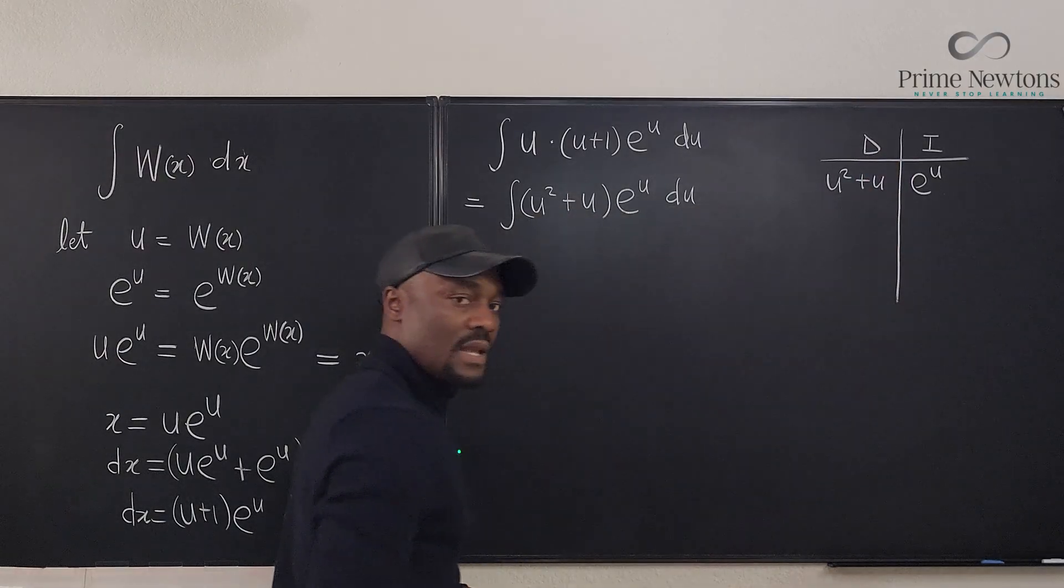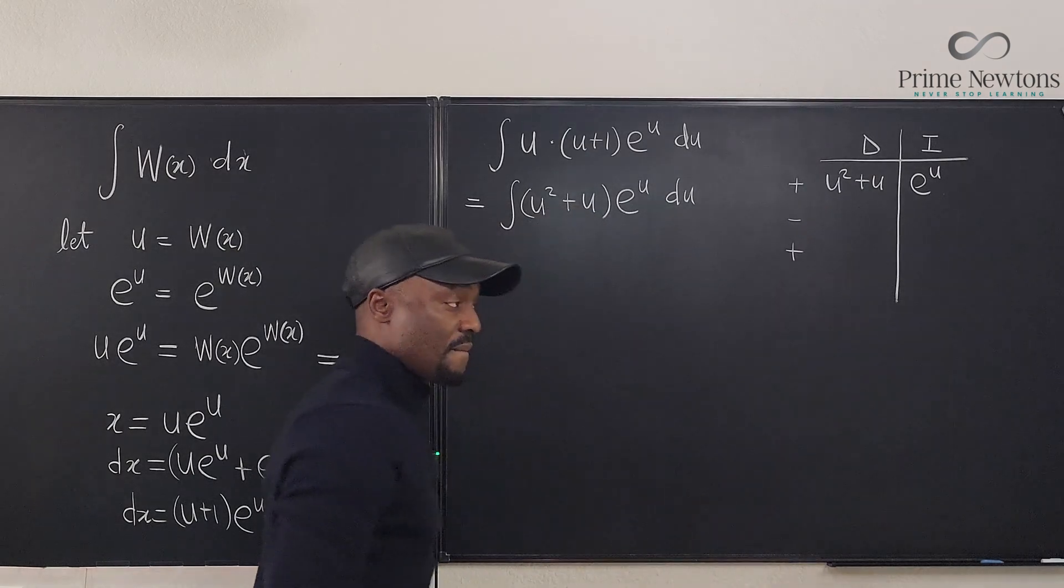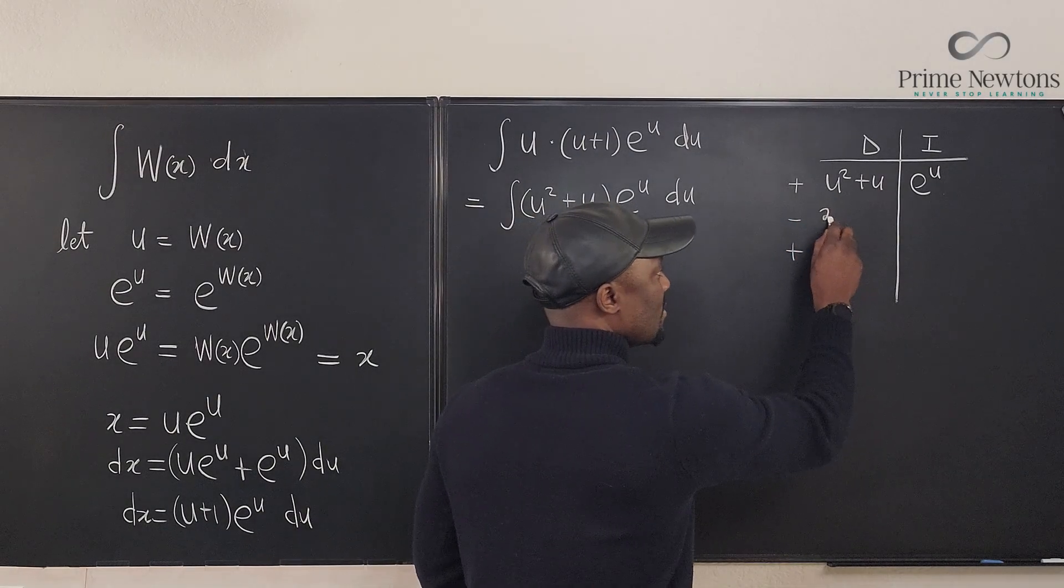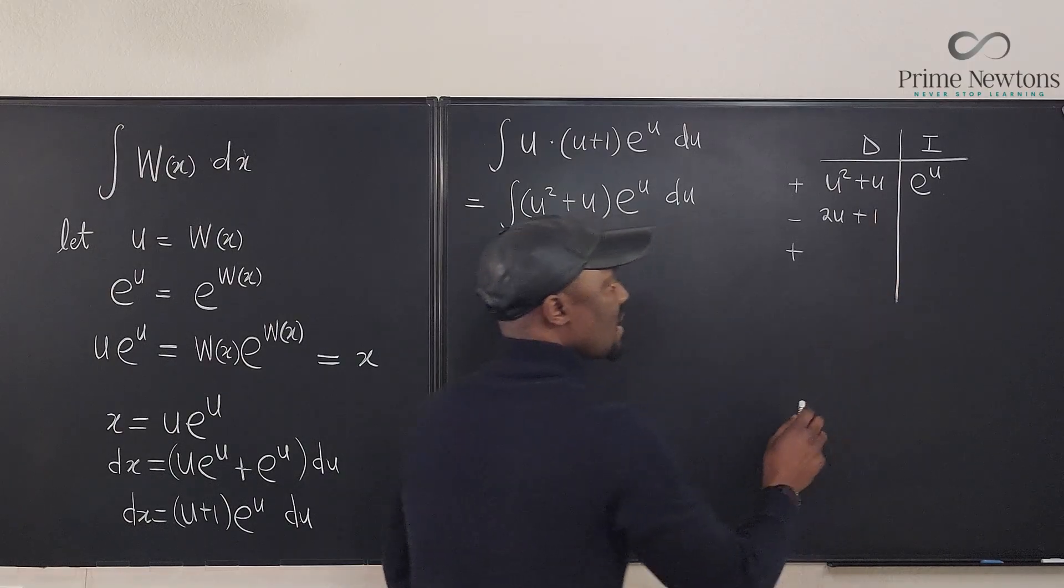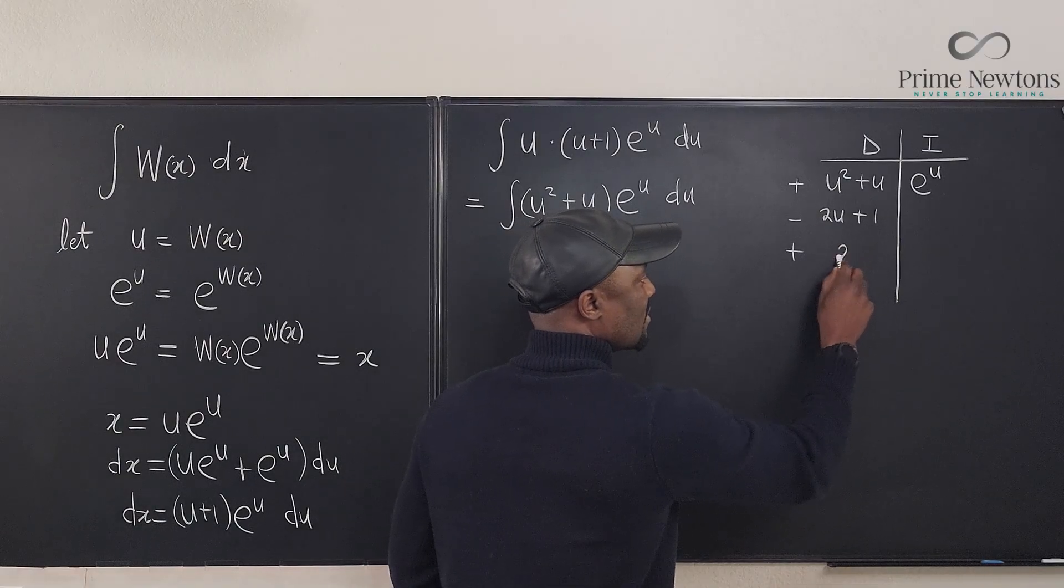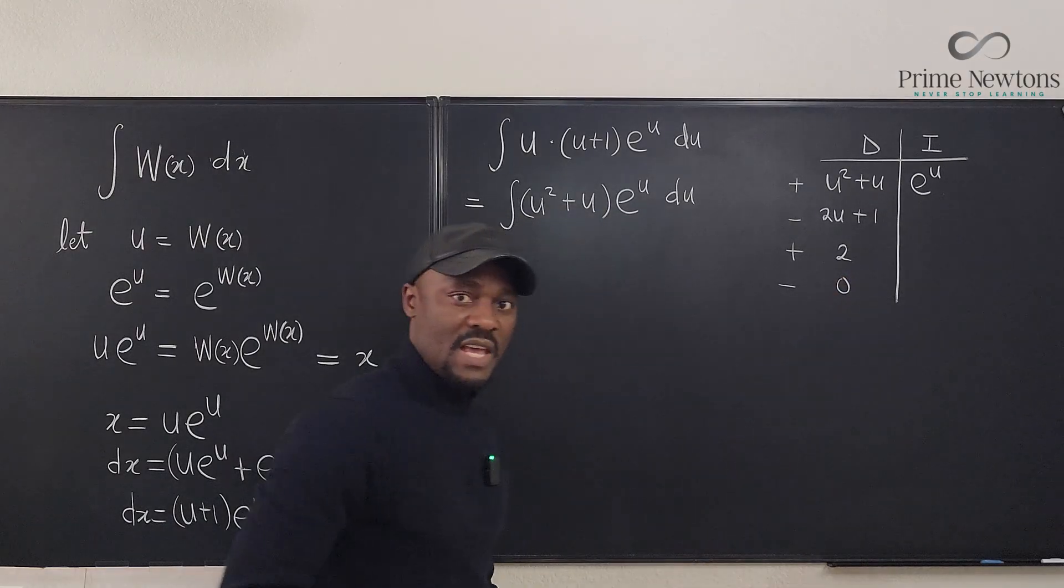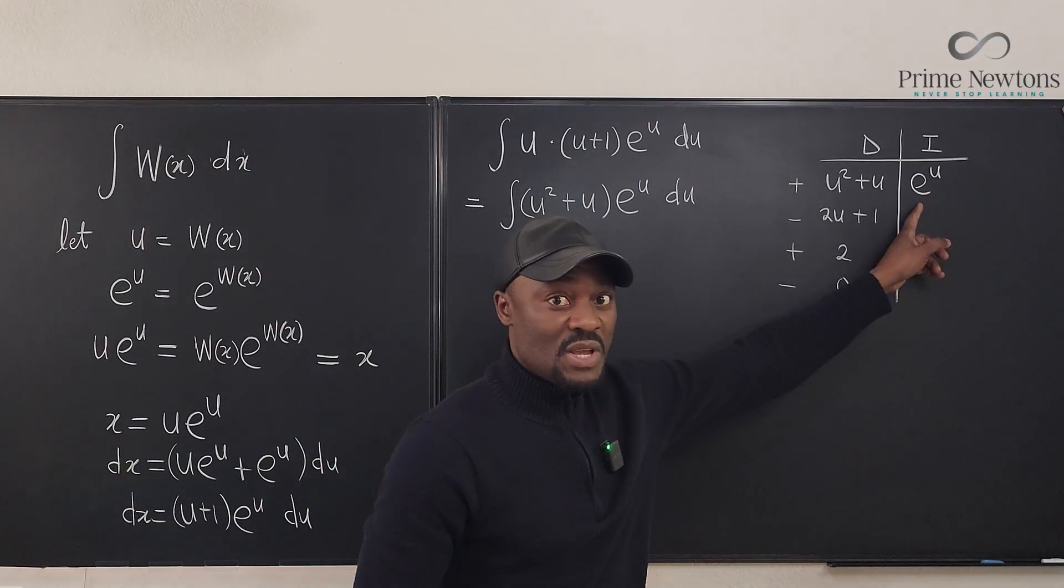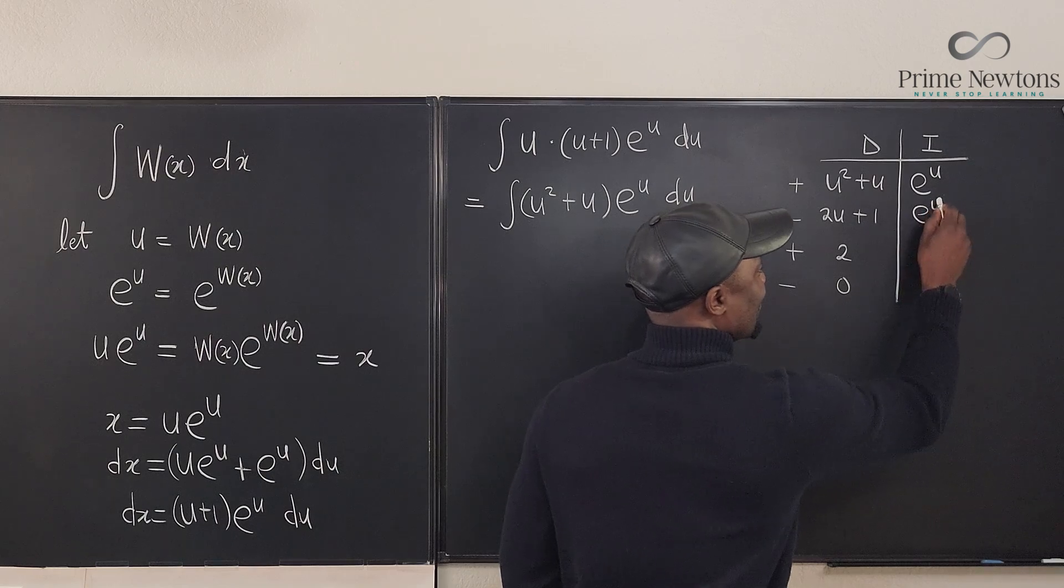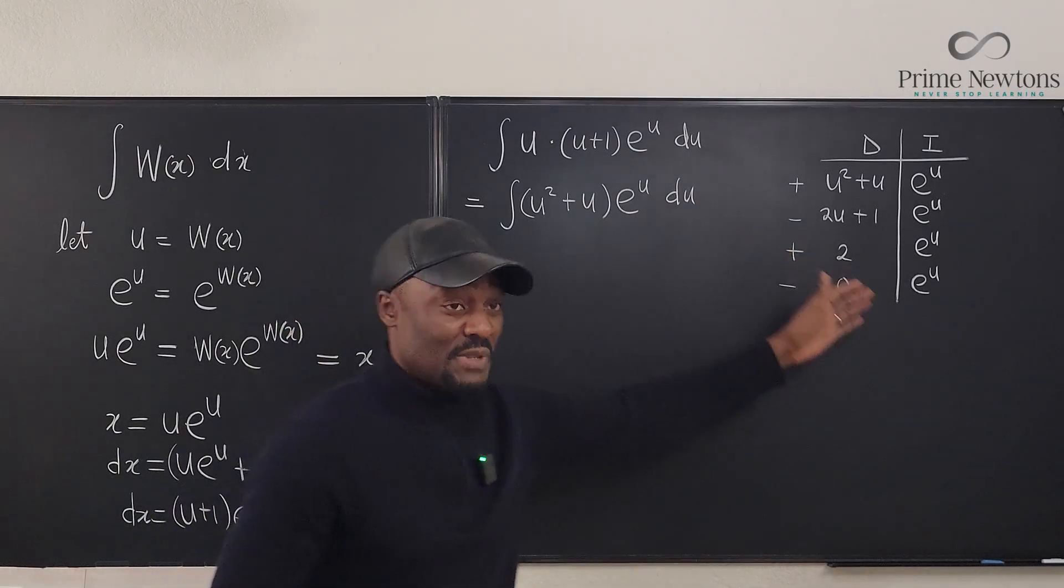Differentiate. Don't forget to put your signs plus, minus, plus. If I differentiate u squared plus u, what would I get? I'll get 2u plus 1. If I differentiate this again, what would I get? I'll get just 2. If I differentiate one more time, I'm going to get 0. Well, you stop whenever you get 0. On this side, you just keep integrating. E to the u. If you integrate e to the u, you get e to the u. E to the u. E to the u.